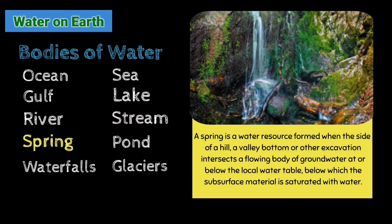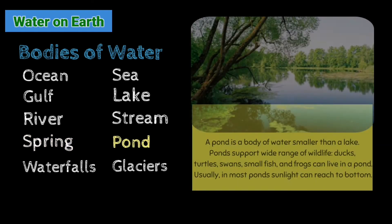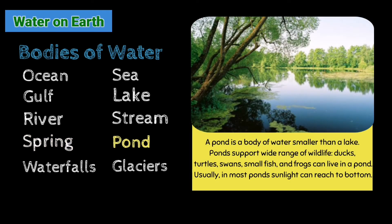A spring is a water resource formed when the side of a hill, a valley bottom, or other excavation intersects a flowing body of groundwater at or below the local water table, below which the subsurface material is saturated with water. A pond is a body of water smaller than a lake. Ponds support a wide range of wildlife. Ducks, turtles, swans, fish, and frogs can live in a pond.